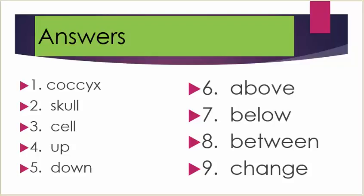Answers. Number one: cossacks. Number two: skull. Number three: cell. Number four: up. Number five: down. Number six: above. Number seven: below. Number eight: between. Number nine: change.